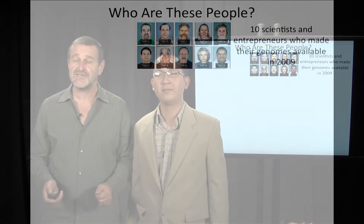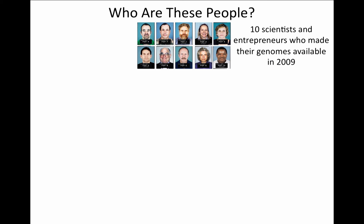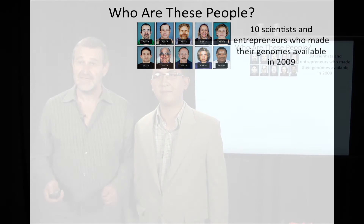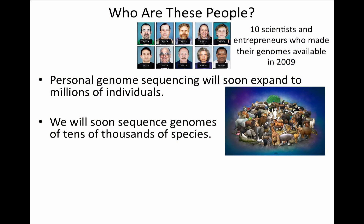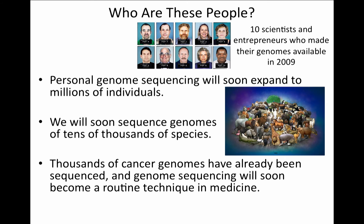These people are not criminals — these are scientists and entrepreneurs who made their genomes available a few years ago and started the personalized genomics revolution. Today, these personalized genome sequencing efforts are in full bloom, and we will soon expand sequencing to millions of individuals. At the same time, there are efforts to sequence thousands of genomes, and we will soon have nearly all mammalian genomes sequenced. Simultaneously, there are enormous efforts to sequence cancer genomes and understand what changes in the genome lead to cancer.